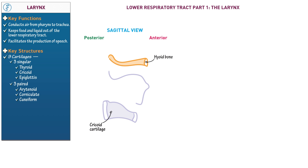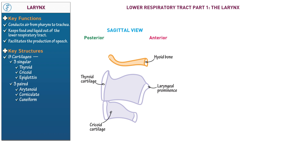Now draw the thyroid cartilage, which forms the anterior and lateral walls of the larynx. The thyroid gland lies along the anterior wall of the thyroid cartilage. Specifically label the V-shaped laryngeal prominence, also known as the Adam's apple, which forms where the lateral sides of the thyroid cartilage meet and is typically largest in males. Next, show that the epiglottis attaches to the internal surface of the thyroid cartilage and projects posteriorly and superiorly over the opening of the larynx. When we swallow, the epiglottis falls over the larynx and prevents foods and liquids from entering the lower respiratory tract. Place your fingers on your neck below your jaw and swallow to feel your larynx shift forward and up — this movement causes the epiglottis to close off the larynx.